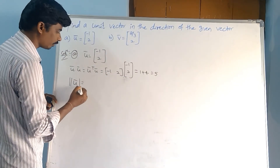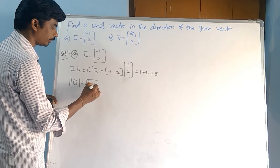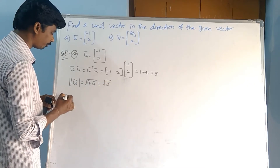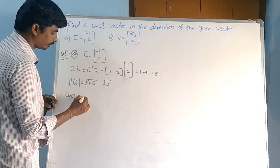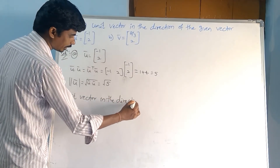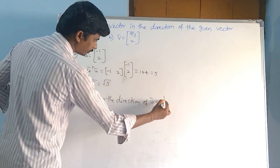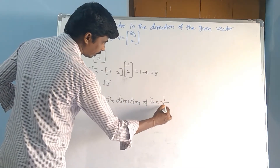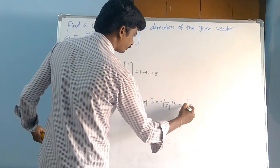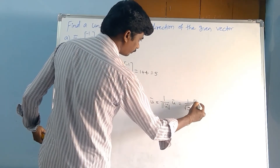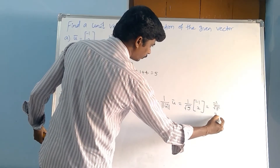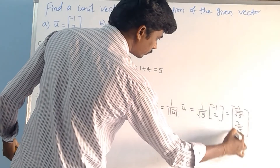Norm of u̅ equals the square root of u̅ dot u̅. The value of u̅ dot u̅ is 5, so that equals root 5. Therefore, the unit vector in the direction of u̅ equals (1 / norm u̅) into u̅, which is (1/√5) into (-1, 2), giving us (-1/√5, 2/√5).